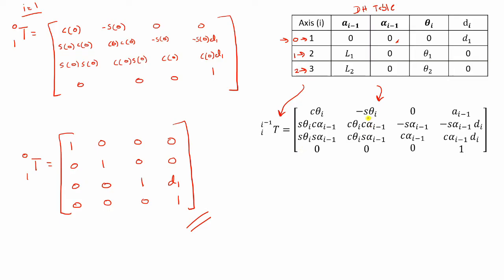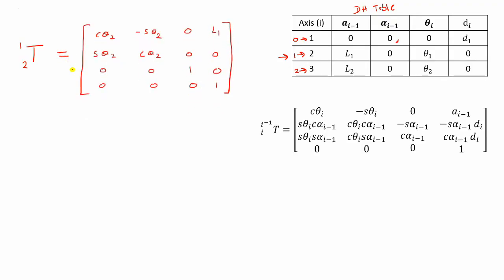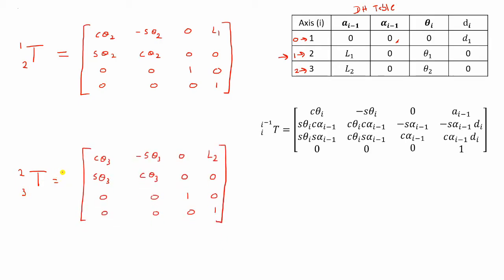It's very simple — all you need to do is substitute in the values from the DH table into this equation. In the next step, we find the transformation matrix from frame 1 to 2, considering the second row of the DH table. Substituting the values gives you that matrix. You can do the same for the final transformation matrix from frame 2 to 3, and you would get the corresponding final answer.